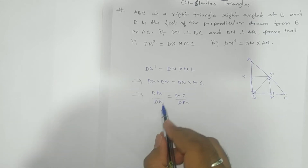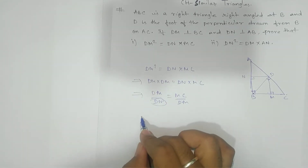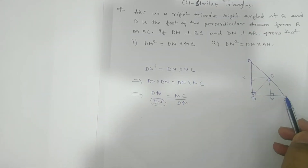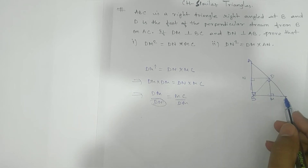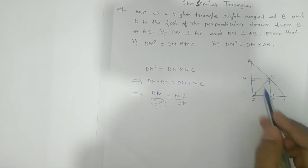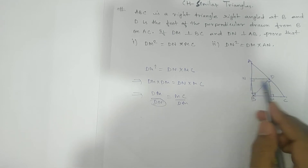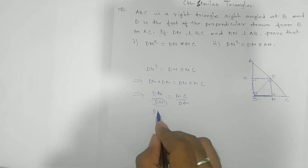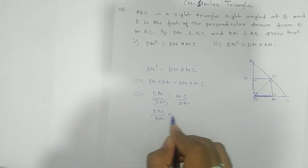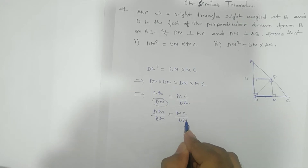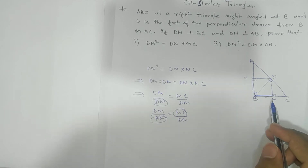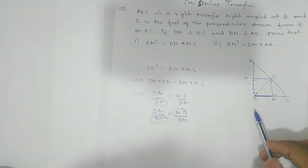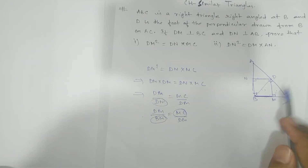In triangle DBC, BM and CM are segments along BC. Since BMDN is a rectangle, DN equals BM. So instead of DM, if we find BM, we get a useful relation. We need to show two triangles similar to establish this connection.